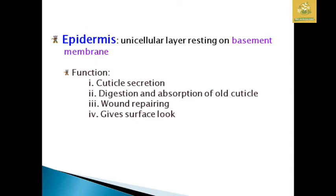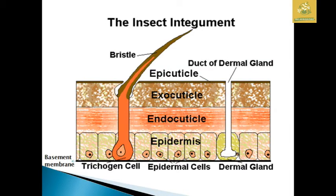The first layer is the epidermis, which is a unicellular layer resting on a basement membrane. Its function includes cuticle secretion — the cuticle is secreted by the epidermis — as well as digestion and absorption of old cuticle, so it can create new cuticle. It also performs wound repair of cuticle forms and provides a surface lining in the insect body.